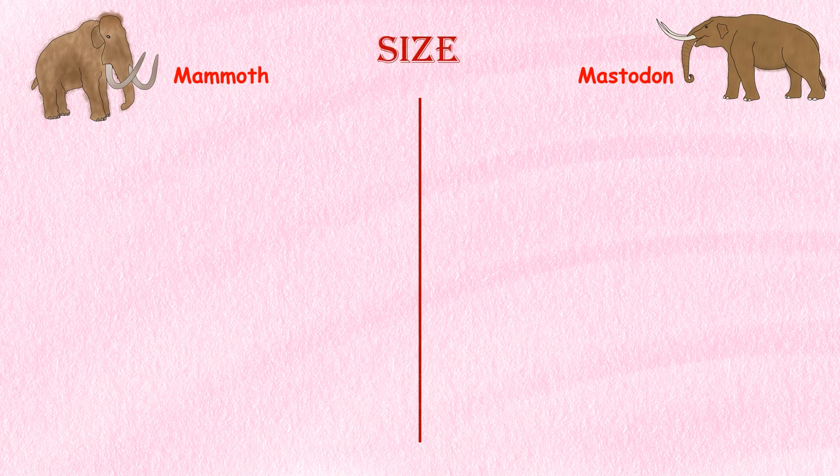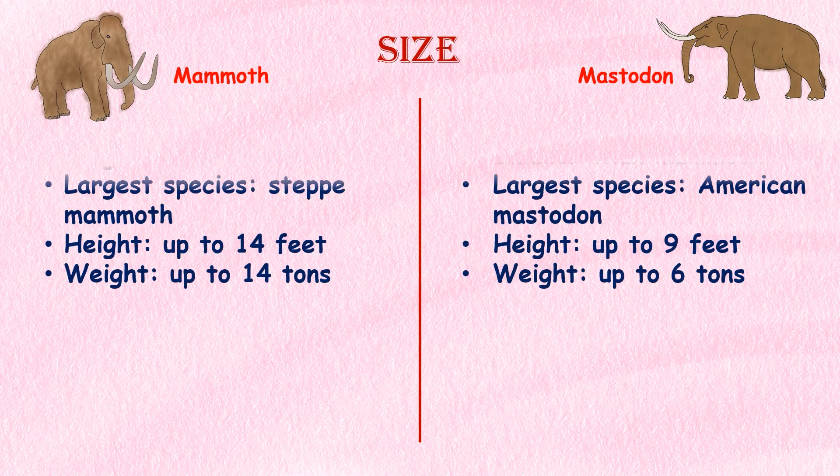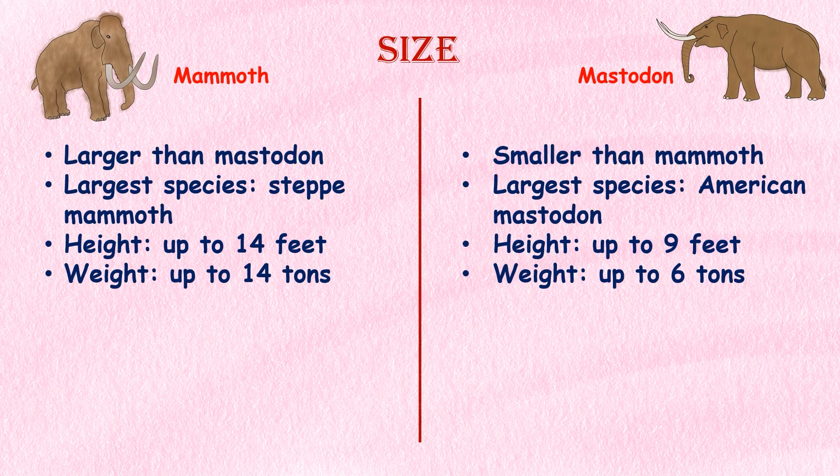Size. Mammoths were generally larger than Mastodons. The largest species of mammoth, the steppe mammoth, could reach heights of up to 14 feet and weights of up to 14 tons. Mastodons were smaller. The largest species, the American Mastodon, could reach heights of up to 9 feet and weights of up to 6 tons.